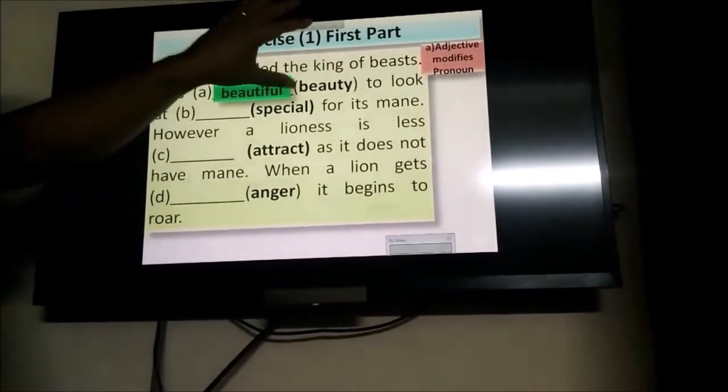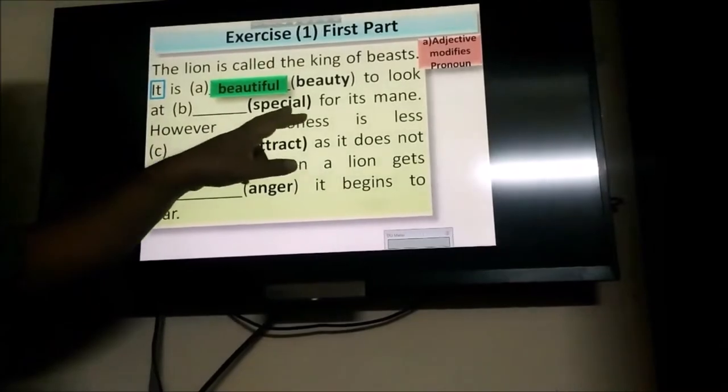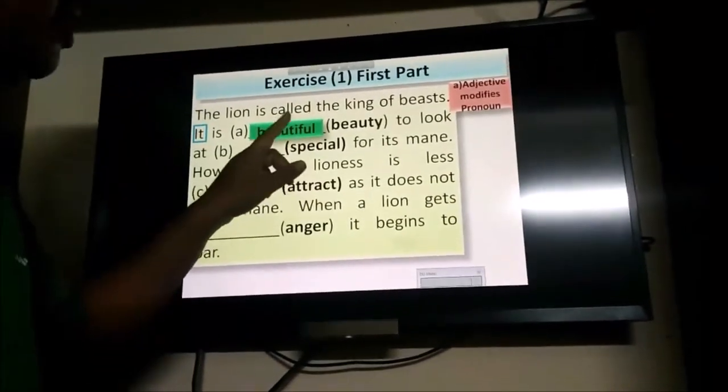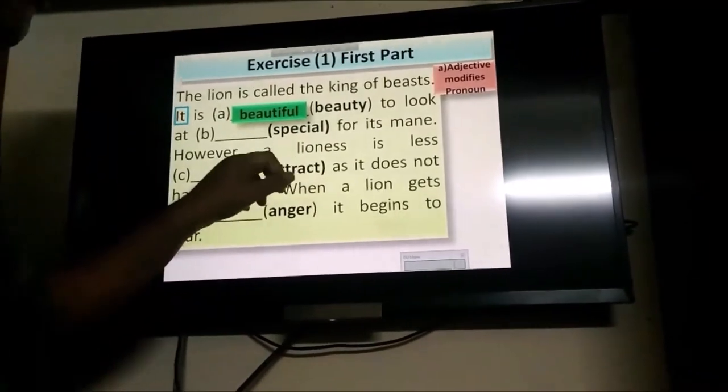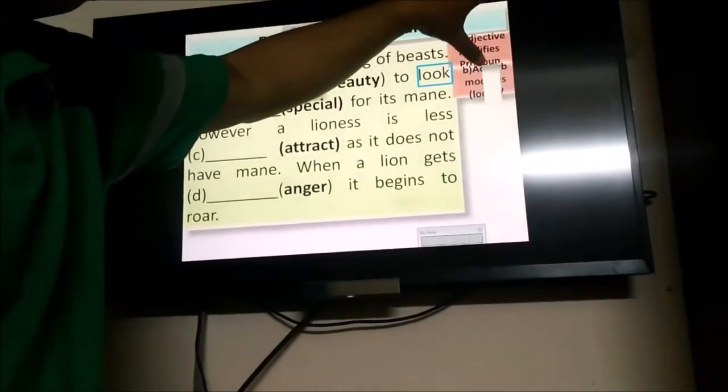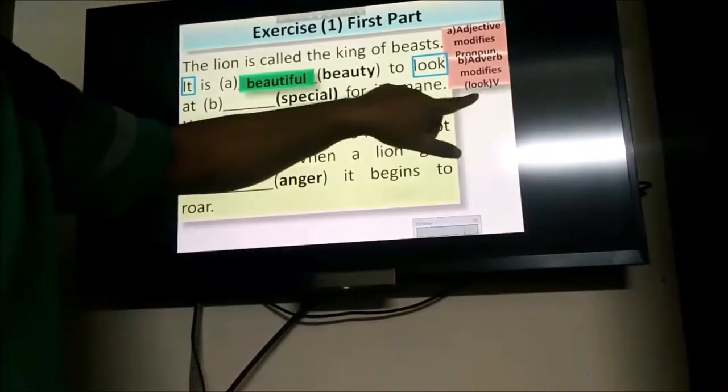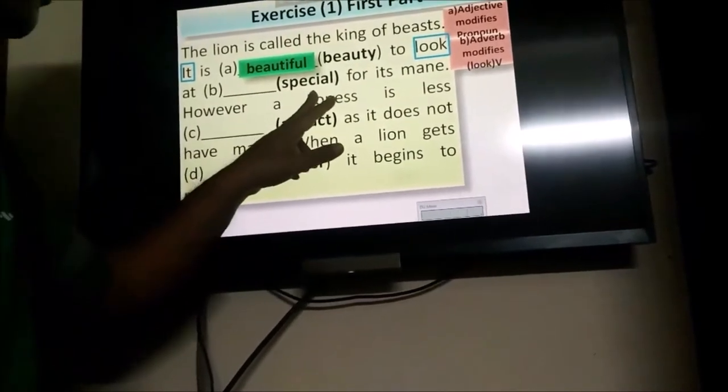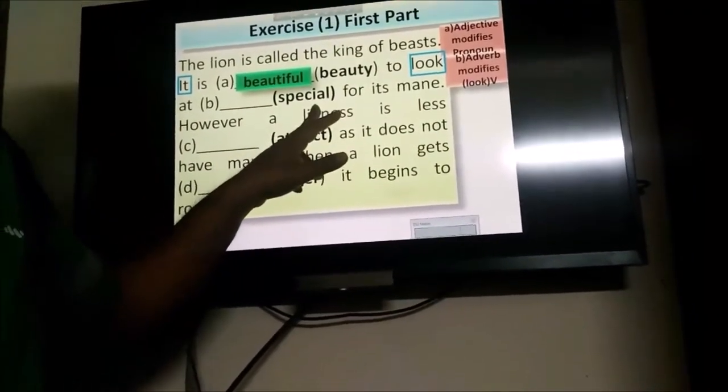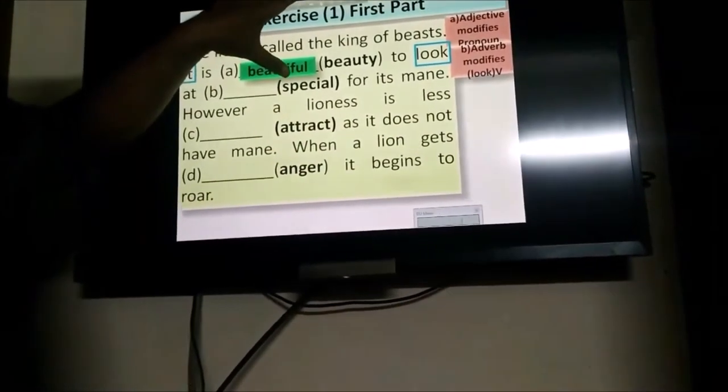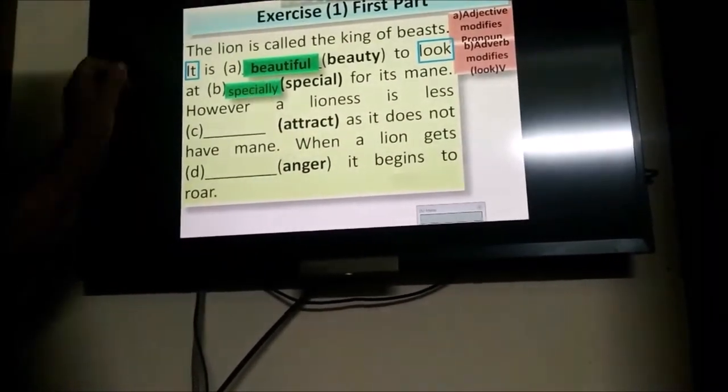To look at special for its mane. Special is given here as an adjective. You need to turn this word into an adverb. And you know that adverb modifies verb. And we have already found this verb look. So, L-Y will be added for turning it into an adverb. So, your answer will be especially for its mane.